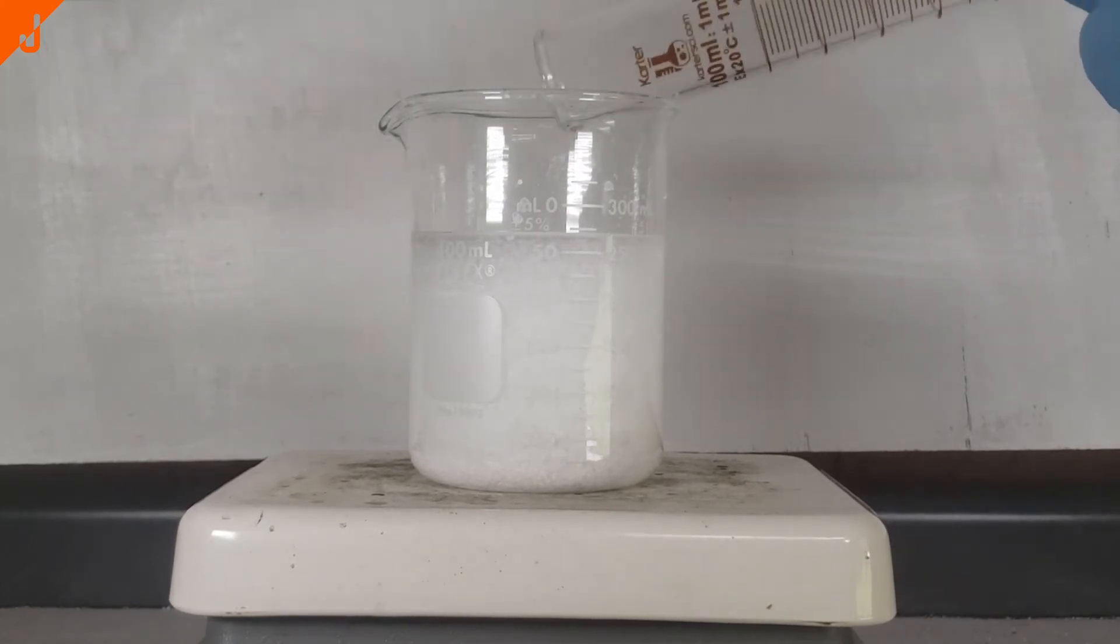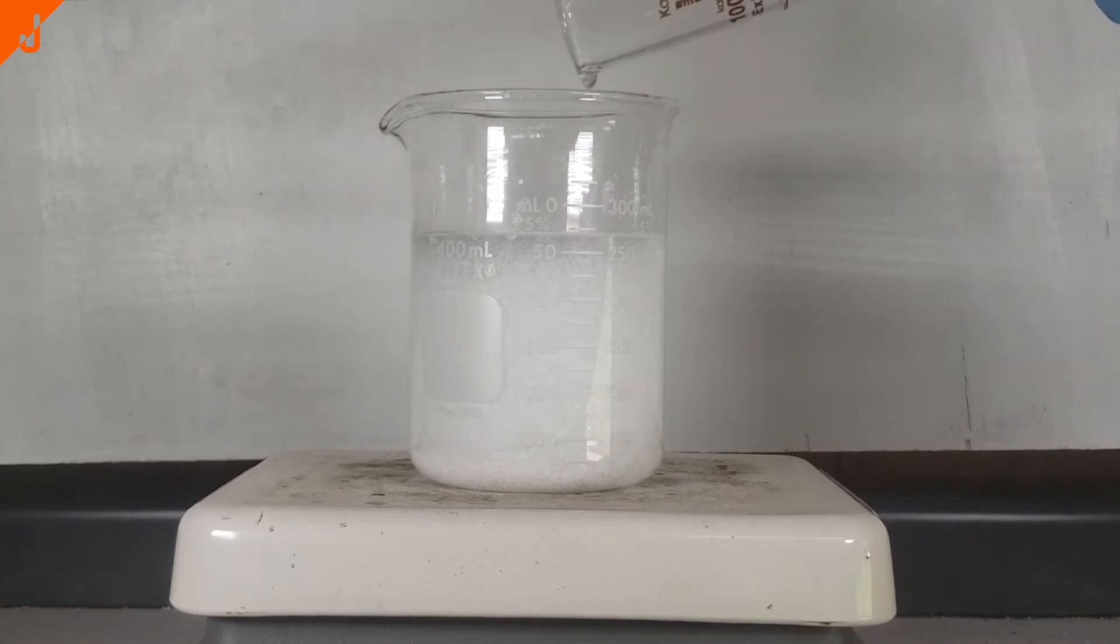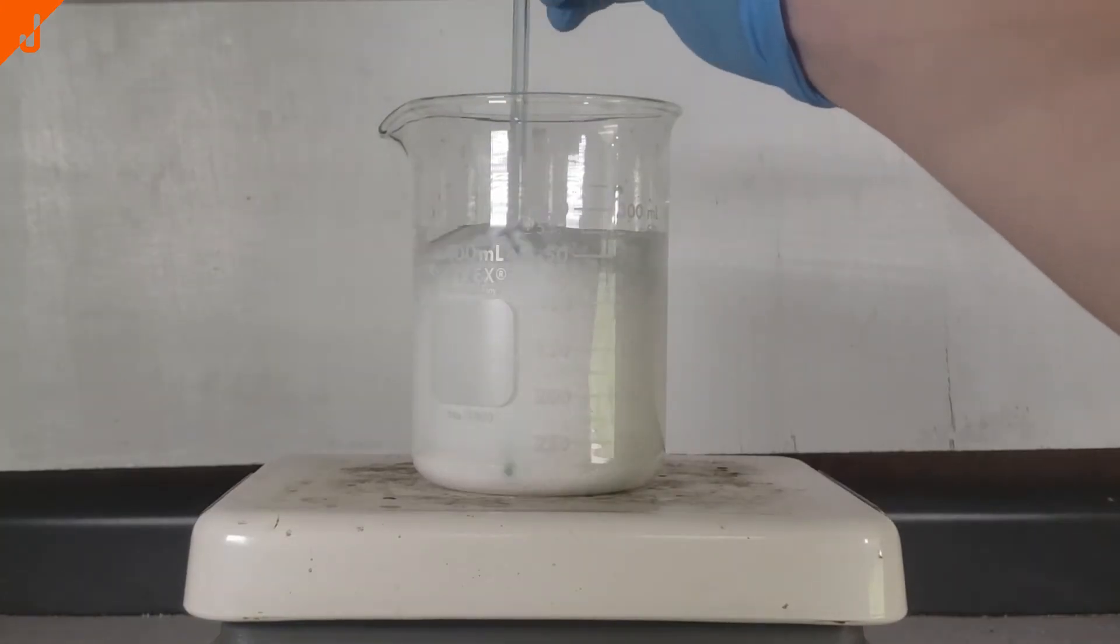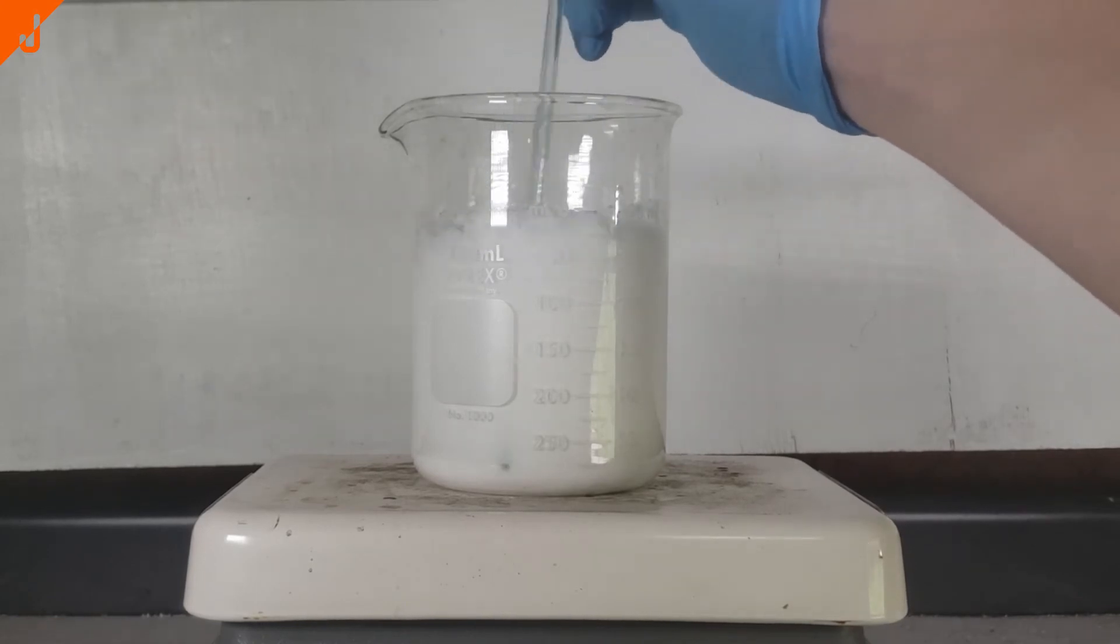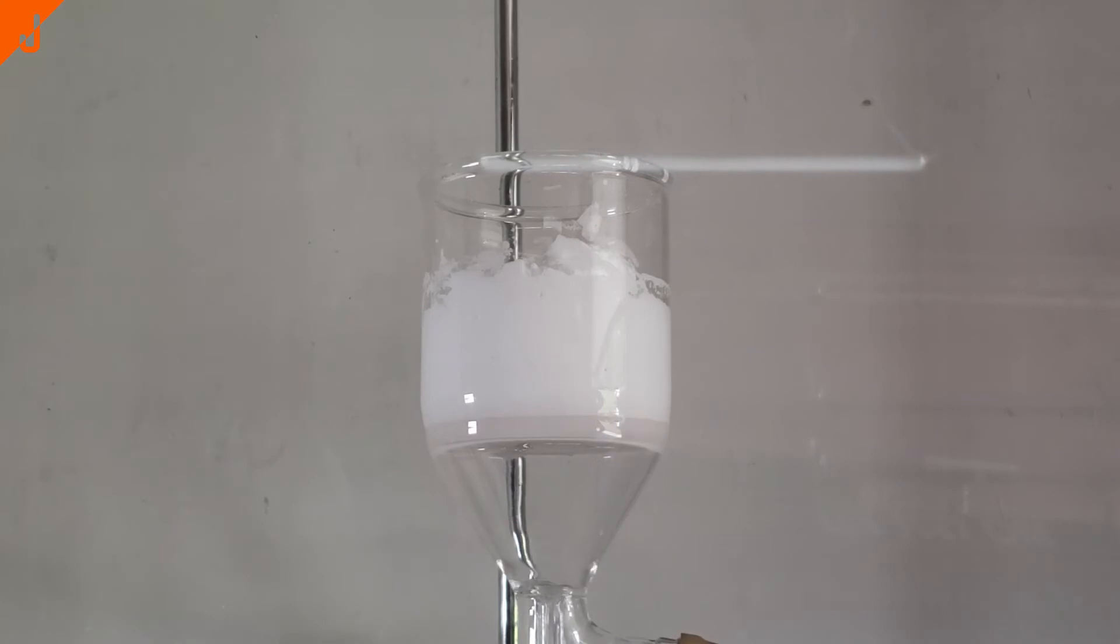After I finished addition of the hydrochloric acid I then let it stir for around 15 minutes. After these 15 minutes I began vacuum filtering it.